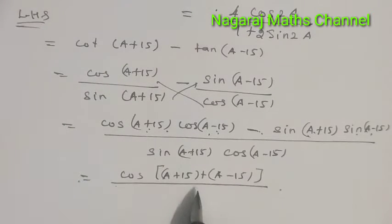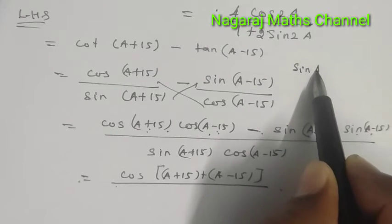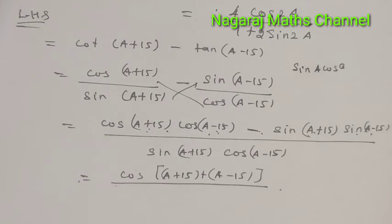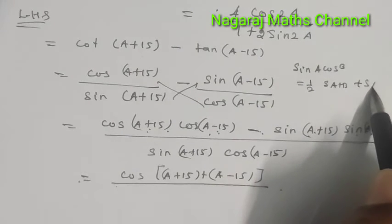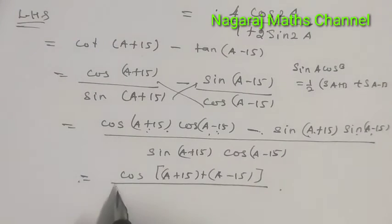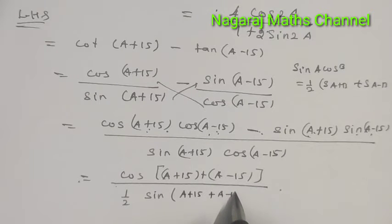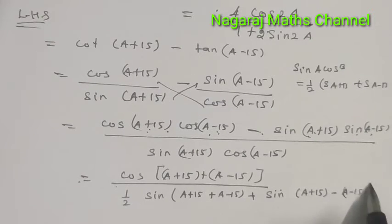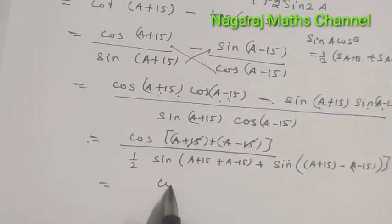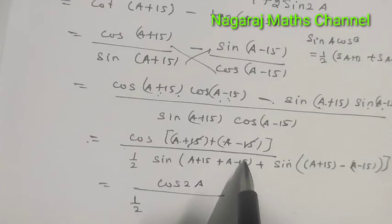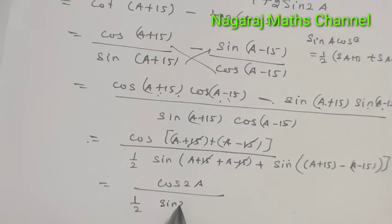For the denominator, using the sine formula: sin A cos B equals 1/2[sin(A+B) + sin(A-B)]. This gives us 1/2[sin(2A) + sin(30°)], where the 15° terms cancel giving sin(2A) plus 1/2.